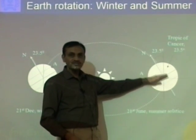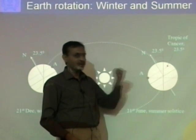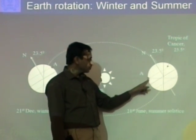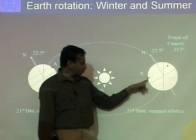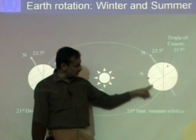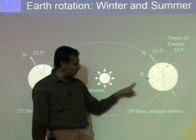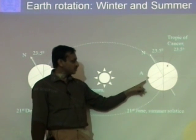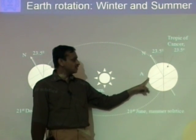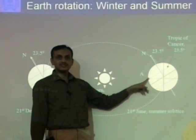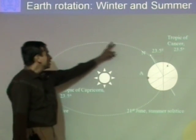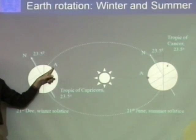Both are 23.5 degrees away from the equator. Suppose I am sitting in a position at the Tropic of Cancer. In this position, this Tropic of Cancer is the closest to the sun. If somebody is living at the Tropic of Capricorn, it is away. What does it mean? This point is getting the highest amount of solar radiation on the earth's surface, so it is likely that the season here is summer in this condition.